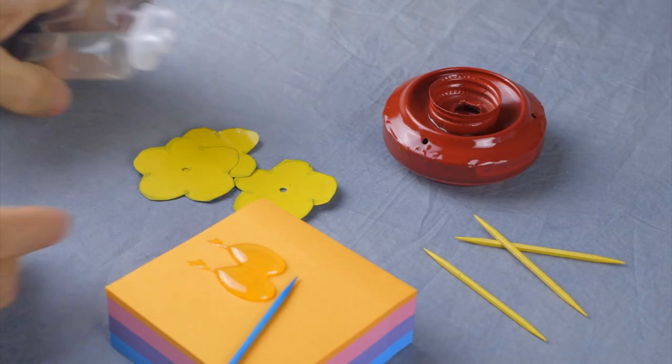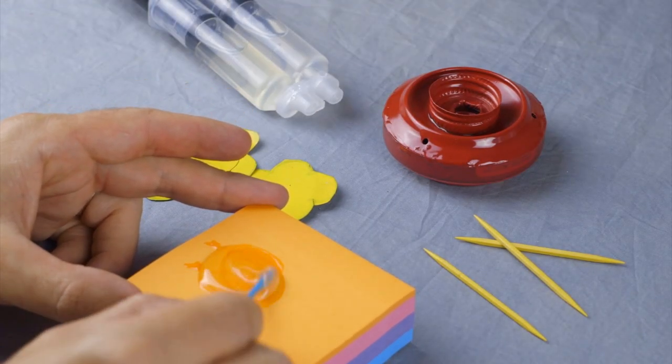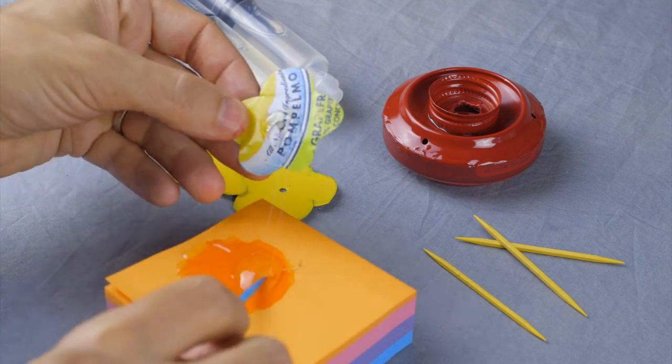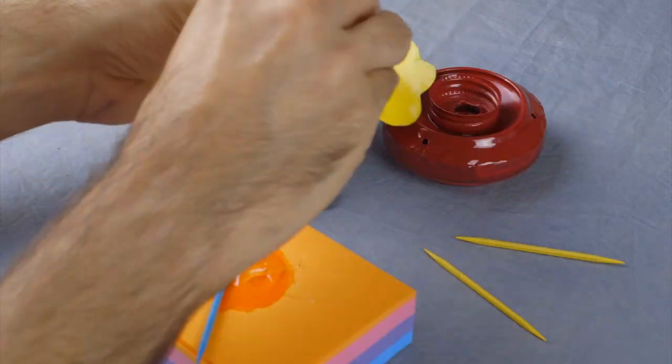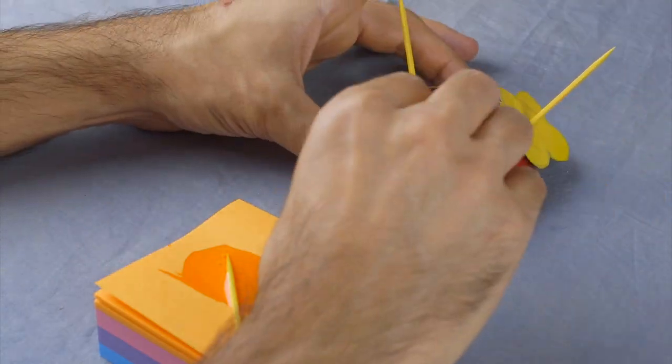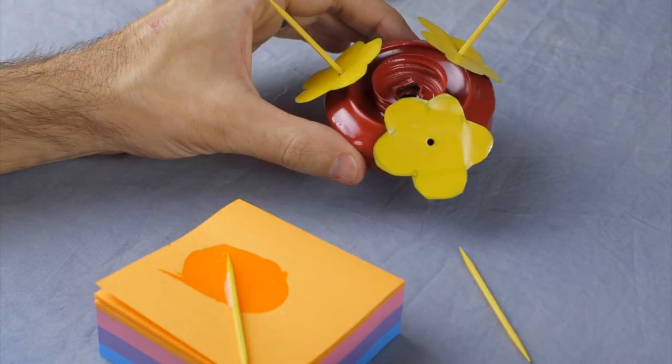Once the paint has dried, mix up another small batch of epoxy. Glue the flowers onto the base using toothpicks to help line up the holes. Be sure to remove the toothpicks before the epoxy sets completely.